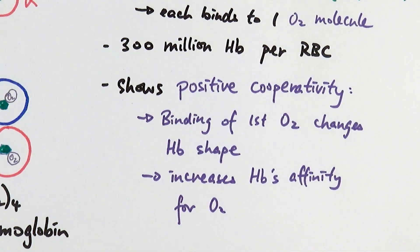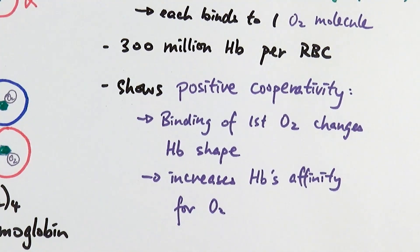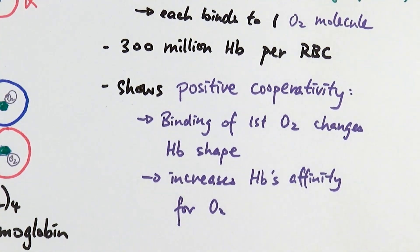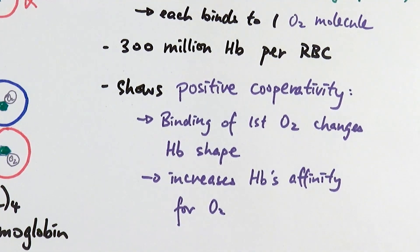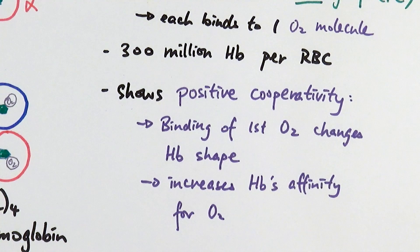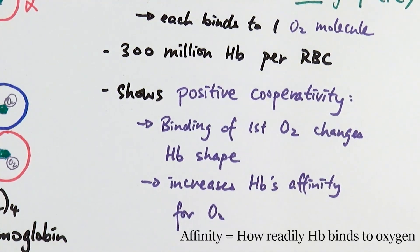Oxygen can show something called positive cooperativity, which means that when the first oxygen molecule binds to haemoglobin, that binding causes the haemoglobin to change its shape. It changes shape in such a way that allows the other subunits to bind to the next oxygen even more easily — almost like opening up the subunits, enabling easier binding. We describe this as increasing the haemoglobin's affinity for oxygen, where affinity refers to how easily the haemoglobin can bind to oxygen.